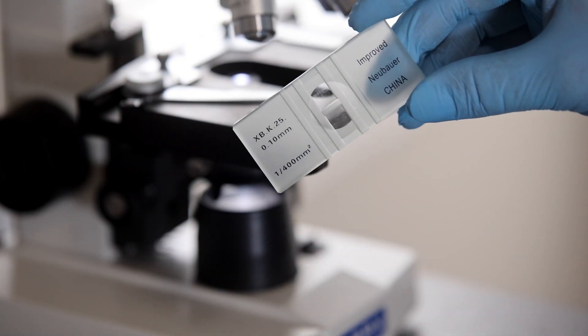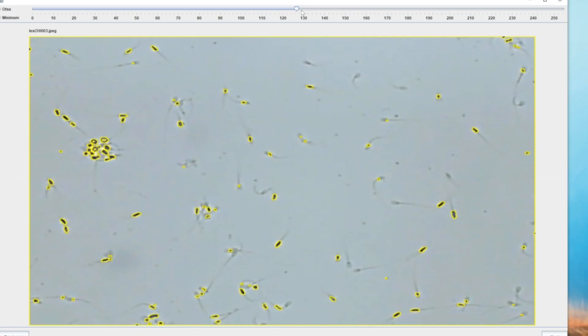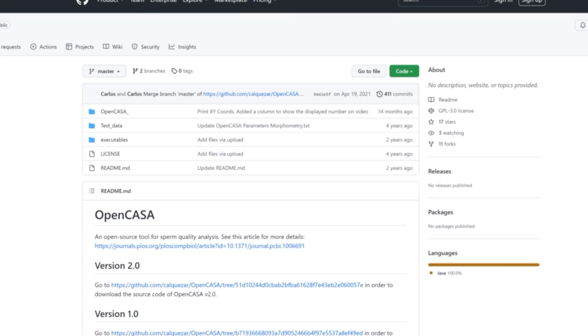We'll occasionally perform a count using a hemocytometer, but usually just analyze the motility rates using an open source CASA program that captures the video and analyzes the sperm for us. It's a free software, but it's quite complicated to use and a bit outside of the scope here. I'll place a link below if you want to check that out.